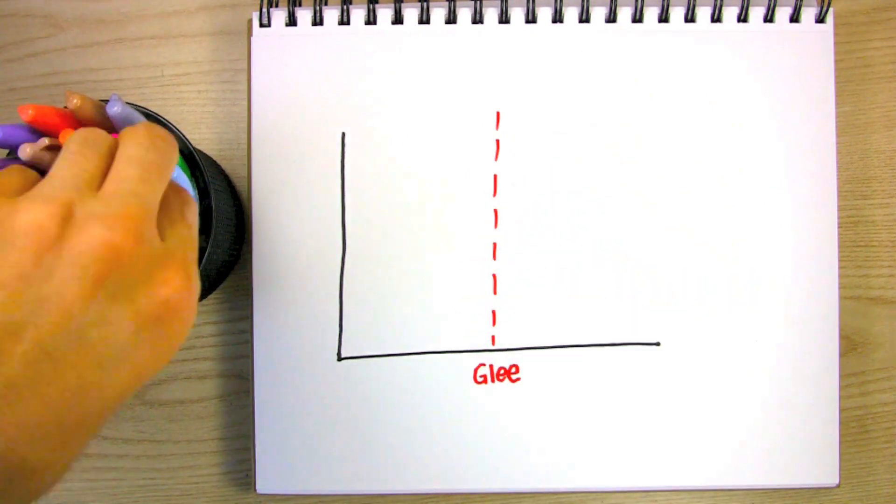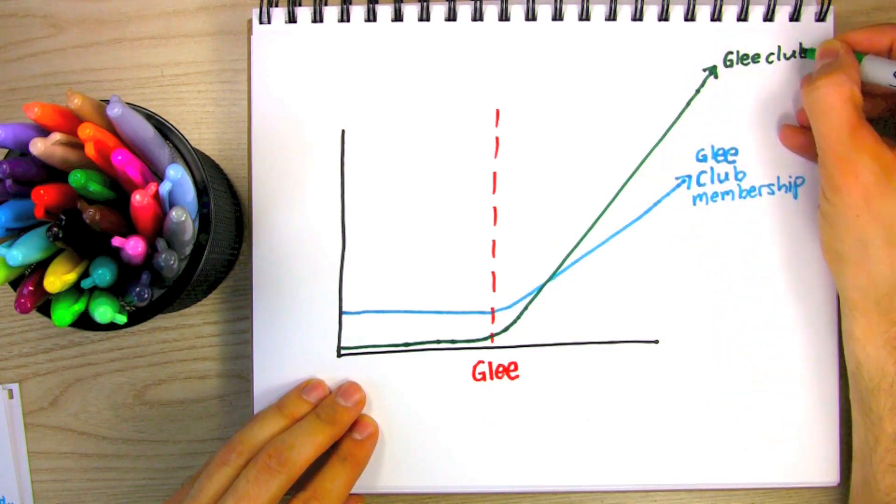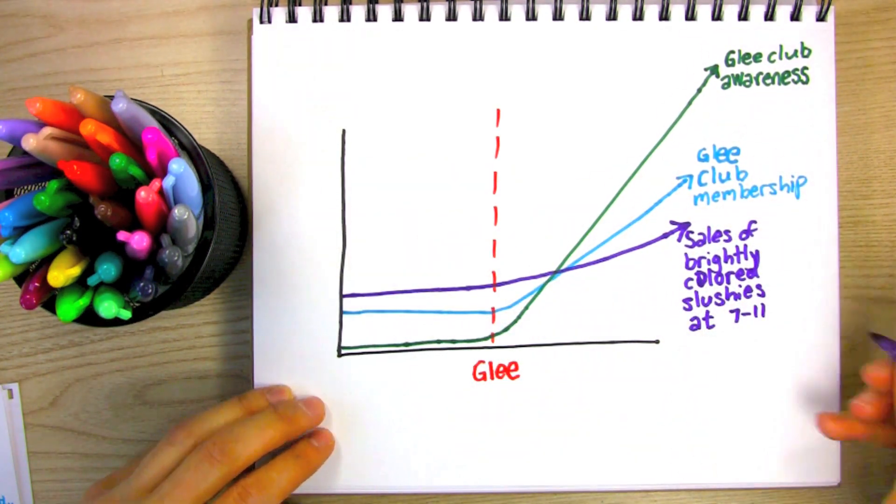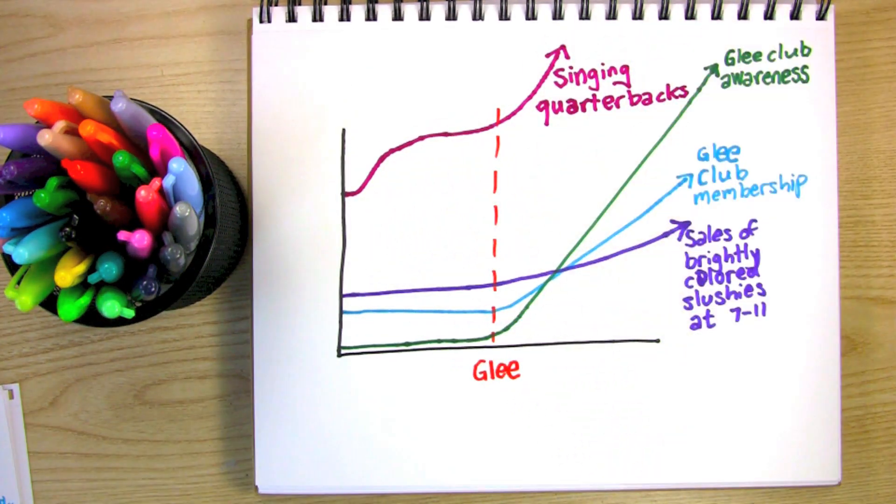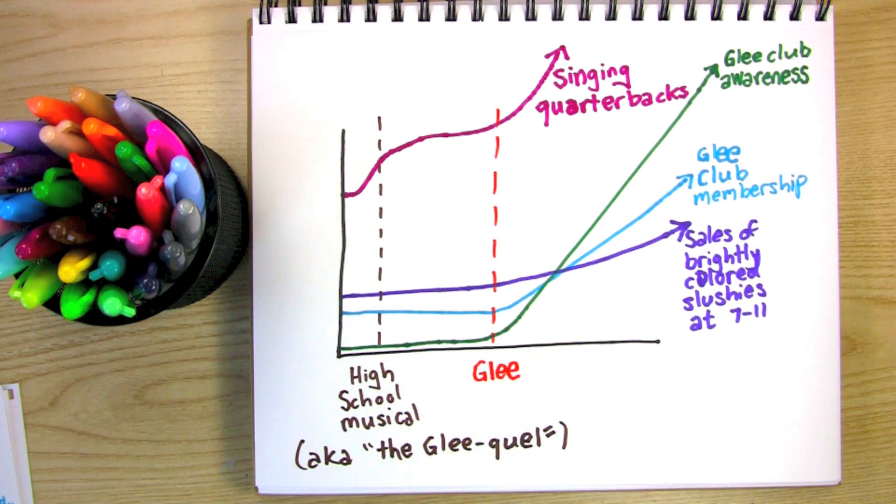there's been a huge increase in the attendance at high school Glee clubs nationwide, as well as an increase in the number of people who know what a Glee club is. It's also increased the number of football players trying out for musicals, but that number was actually already on the rise thanks to High School Musical, a.k.a. Glee, Part 1.